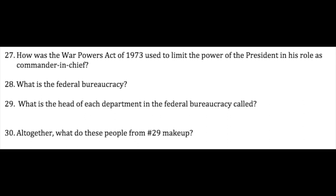The federal bureaucracy is an organization of non-elected people — that's what bureaucrats are — in the executive branch. It consists of about 3,000 leaders appointed by the president, some with Senate approval. There are 2.7 million employees hired based on merit, not elected or appointed, and about 1.4 million military personnel. The head of each department is called the secretary — for example, Secretary of Education, Secretary of Defense, Secretary of Homeland Security. Question 30: when you take all of those secretaries of each department together, they make up what's called the president's cabinet.